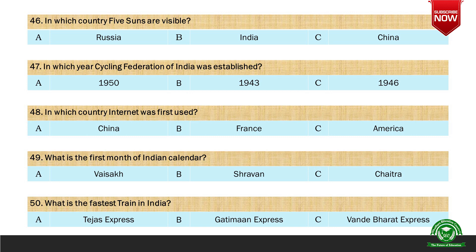Next question: In which year was the Cycling Federation of India established? Options are A. 1950, B. 1943, and C. 1946. And the correct option is C. 1946.